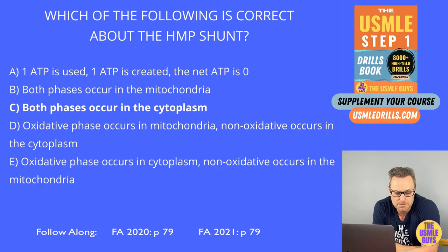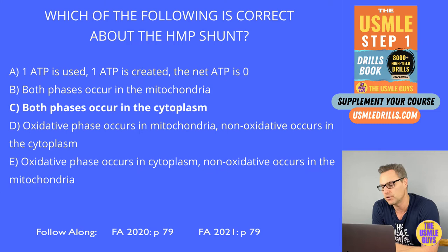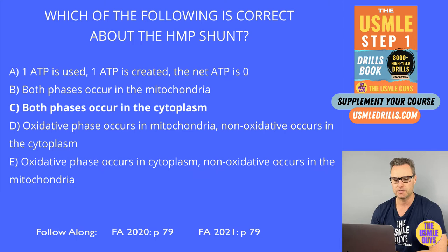Drugs commonly known to precipitate hemolytic anemia in glucose-6-phosphate dehydrogenase deficiency include anti-TB drugs, sulfonamides, nitrofurantoin, as well as primaquine or chloroquine.